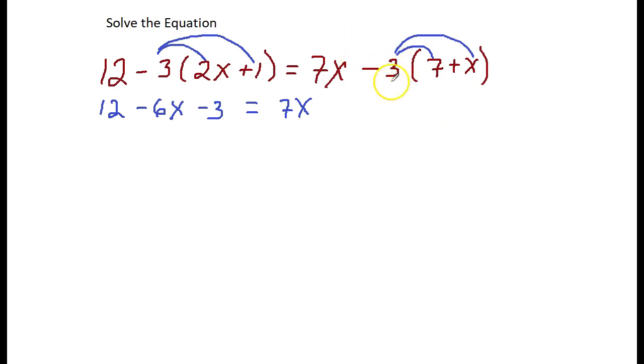Don't forget to keep the negative with the 3, otherwise it'll come back and get you and you'll have the wrong answer. Negative 3 times 7 is negative 21, negative 3 times x is negative 3x. Now my next step is to combine like terms on both sides of the equal sign.